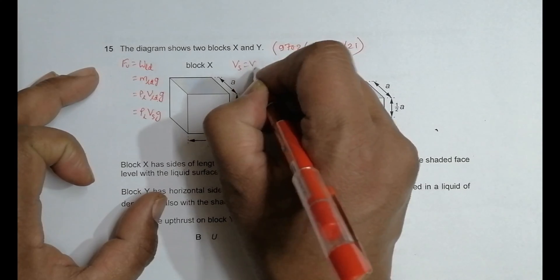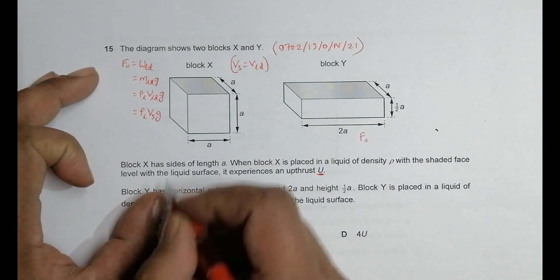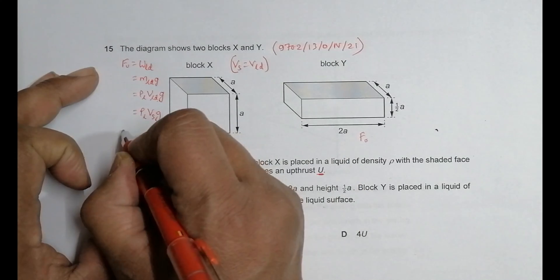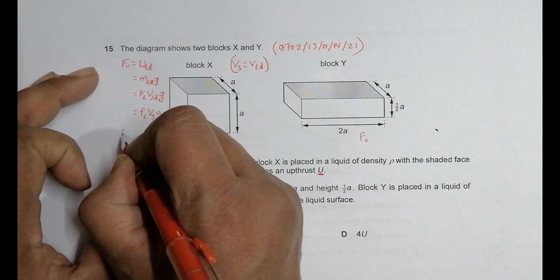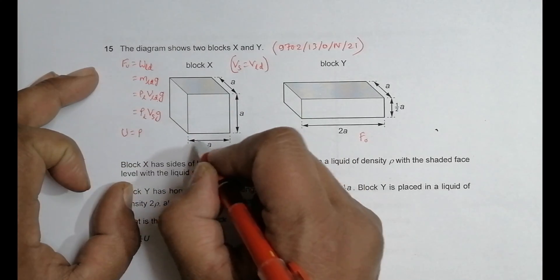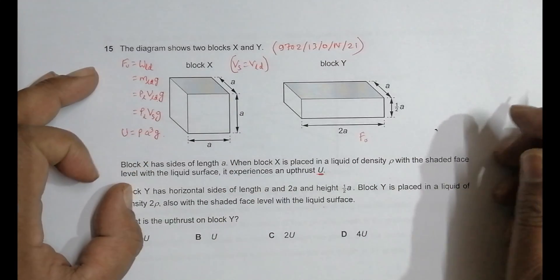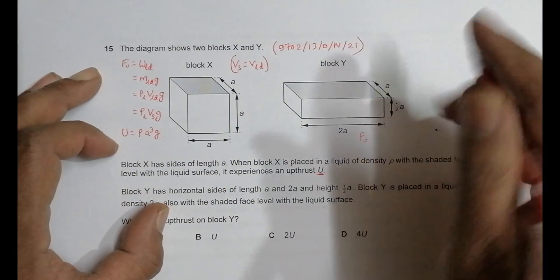The force of upthrust U equals ρ times a³ times g, since it is cubical. This is the force of upthrust in the first case.